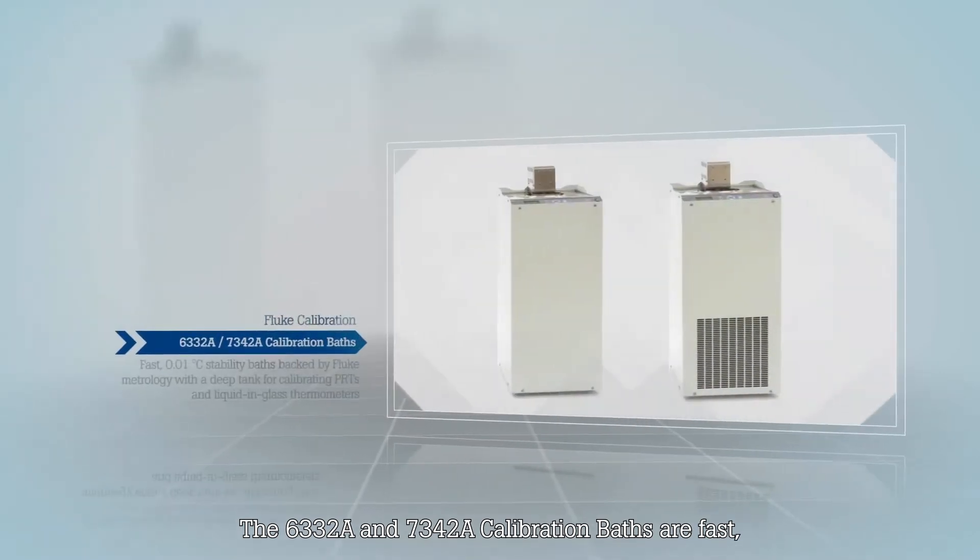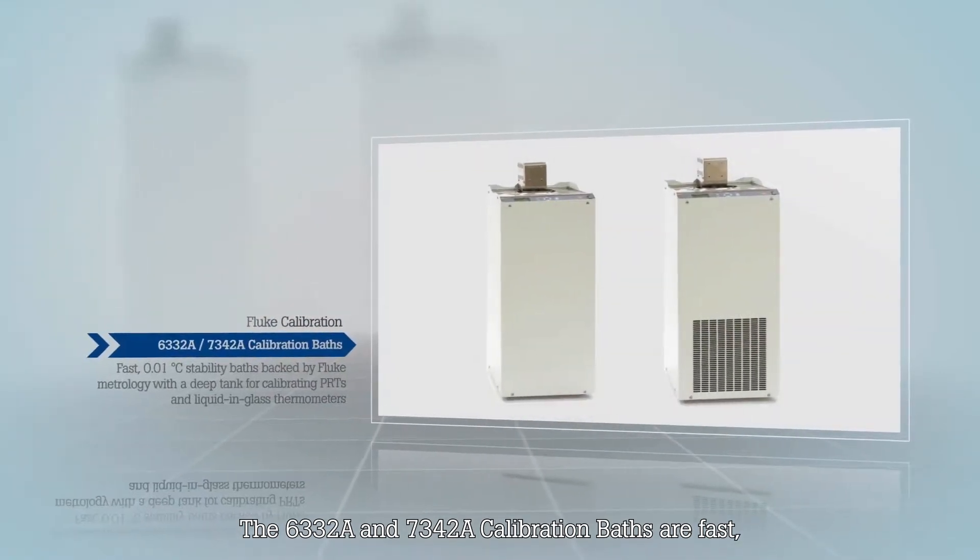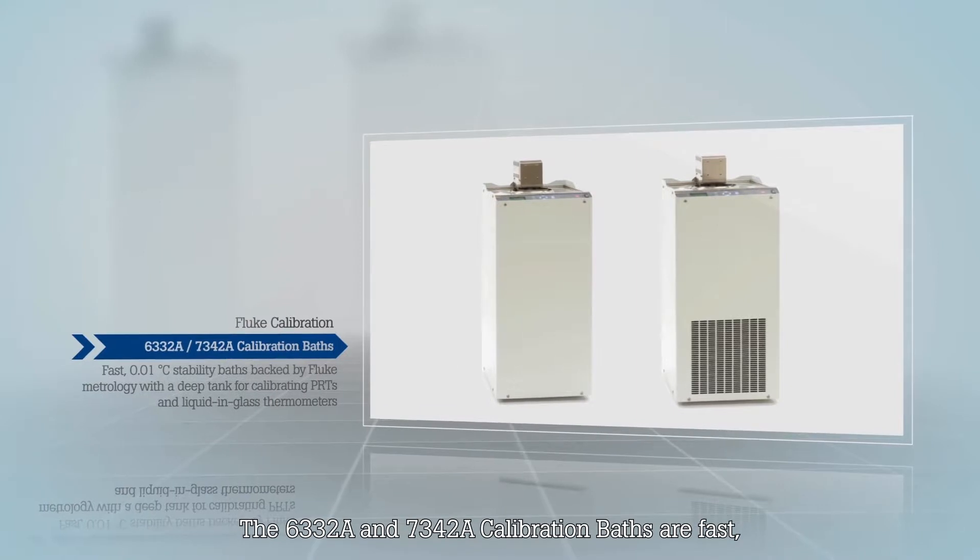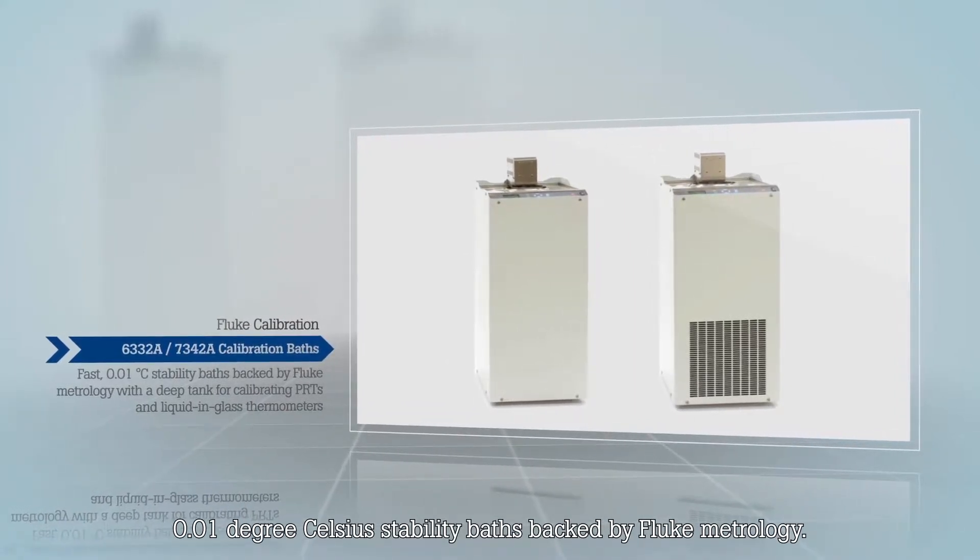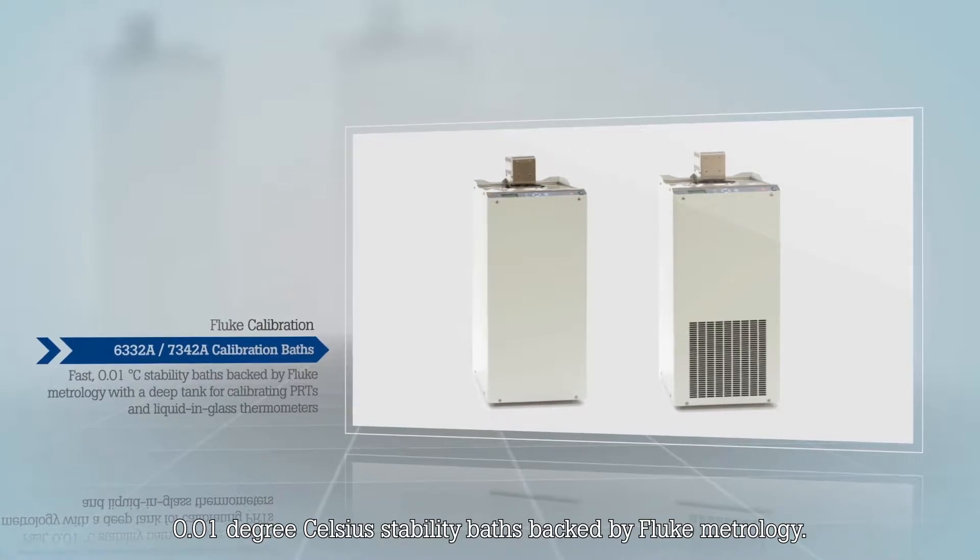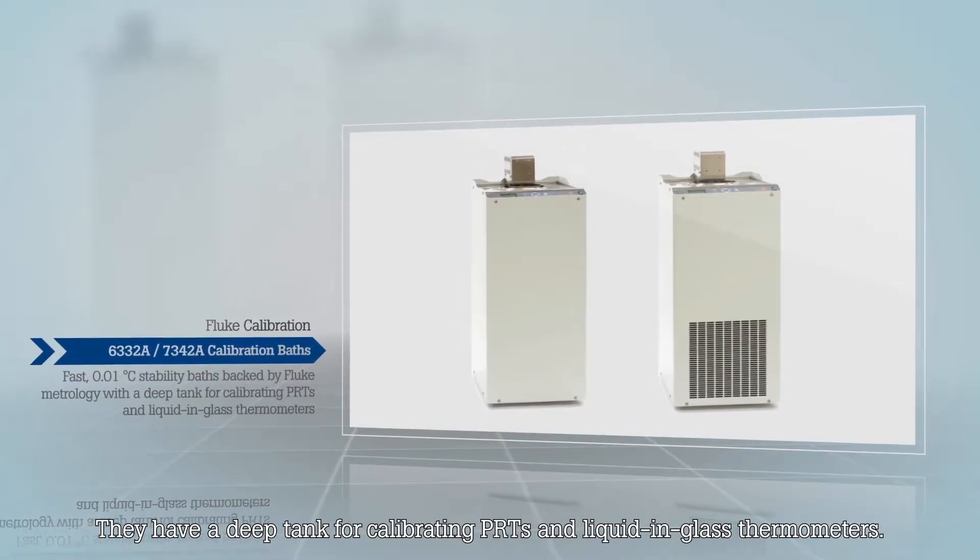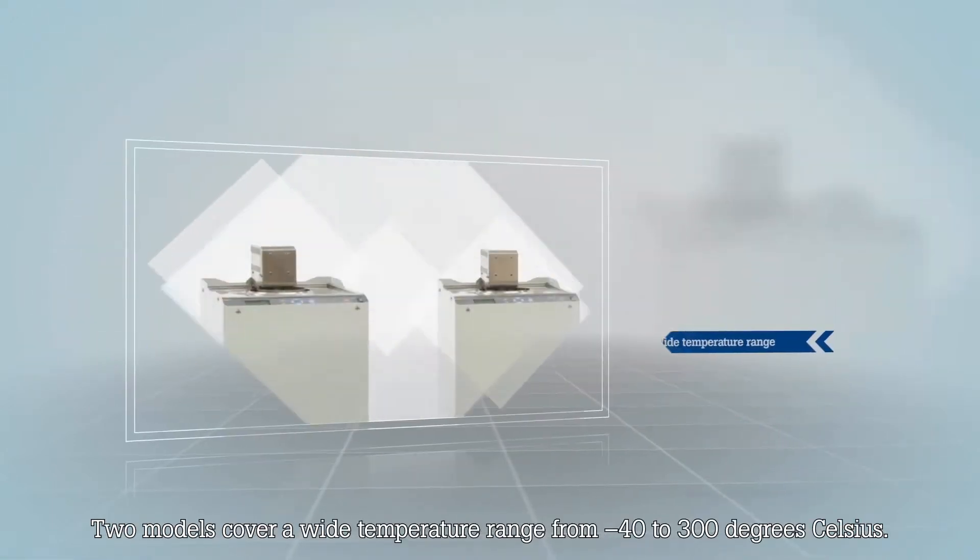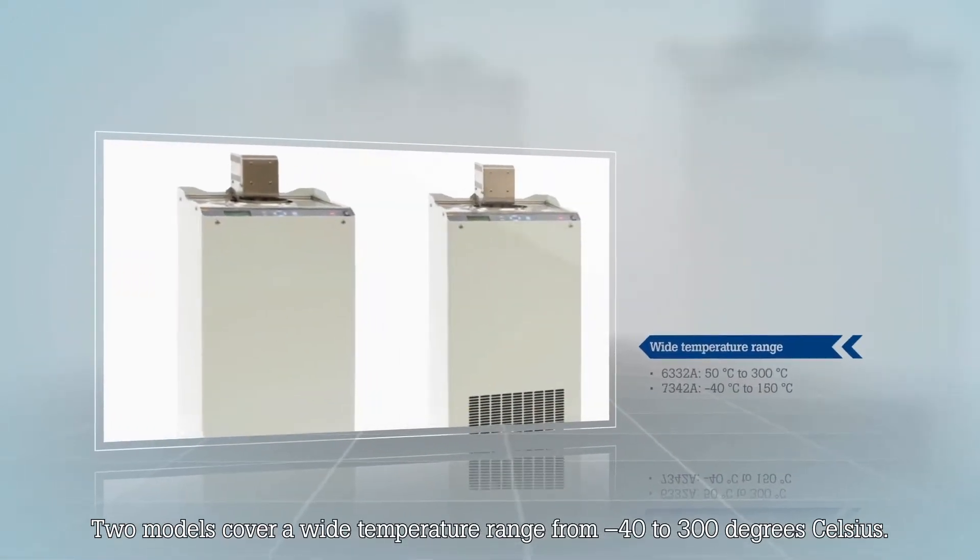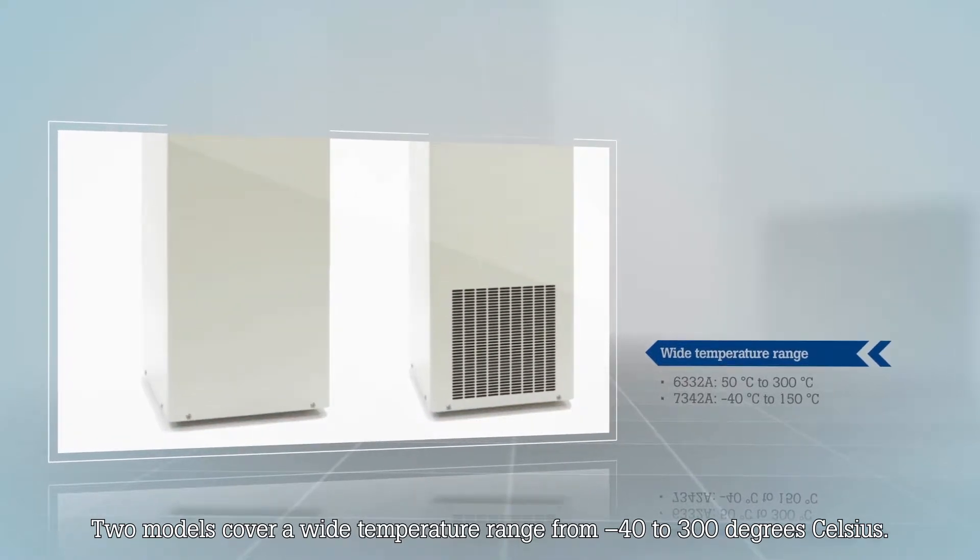The 6332 and 7342 calibration baths are fast 0.01 degree Celsius stability baths backed by Fluke Metrology. They have a deep tank for calibrating PRTs and liquid-in-glass thermometers. Two models cover a wide temperature range from minus 40 to 300 degrees Celsius.